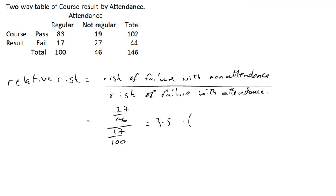So you're 3.5 times more likely to fail with non-attendance than if you had attendance. Absolute risk though, that's different.